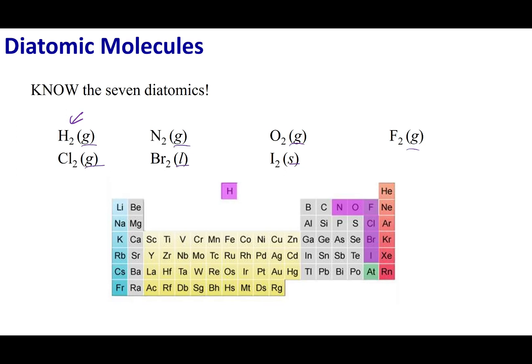An easy way to memorize the seven diatomics is if you look on the periodic table. You start from nitrogen, go to oxygen, fluorine, and all the way down to iodine. It makes a little seven on the periodic table for the seven diatomics. The only one you also have to consider is hydrogen, which is usually on the left-hand side of my periodic table. I hope that made sense, and remember to stay safe.